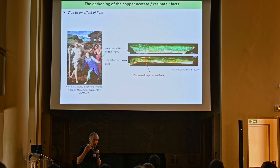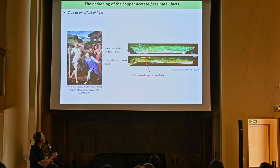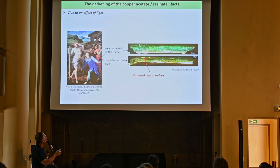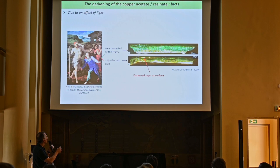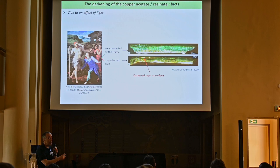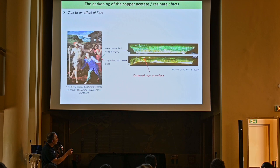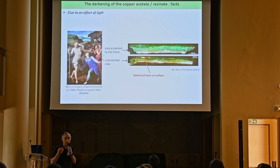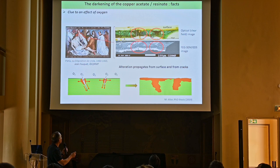As an example of the potential effect of light, we have examples from a painting by Agnolo Bronzino, where two samples were collected very close to each other. One sample was collected in an area initially protected by the frame of the painting, and another was collected in an area exposed to light and atmosphere. On the sample protected from light, the green color is preserved and the sample is not altered. But on the sample exposed to light, a brown part develops at the surface, showing that light must have some kind of effect on the browning.